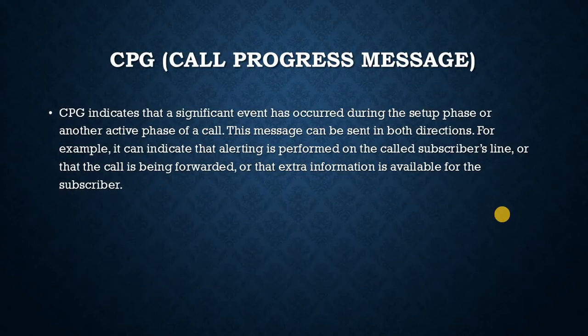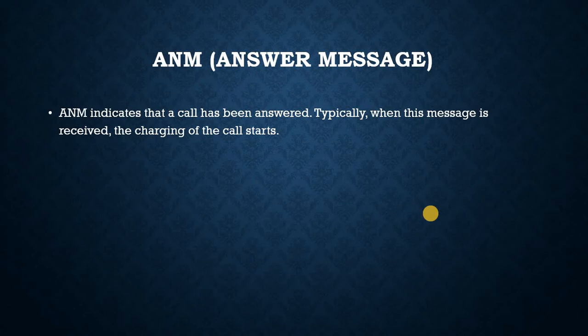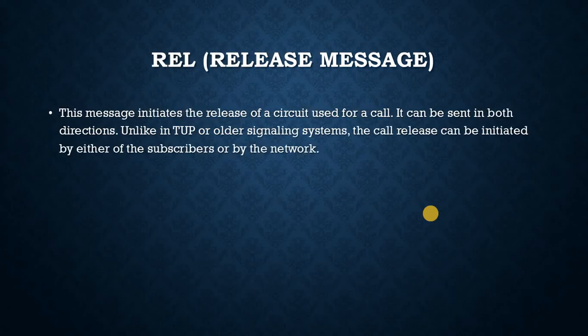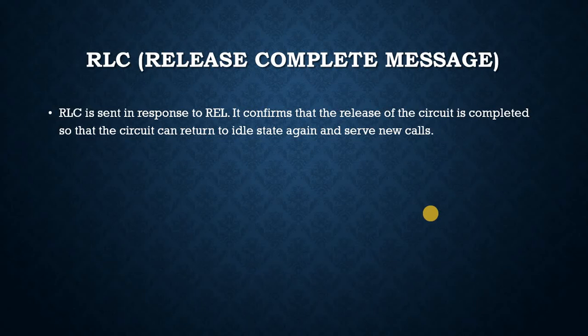CPG, Call Progress Message. CPG indicates that a significant event has occurred during the setup phase or another active phase of a call. This message can be sent in both directions. For example, it can indicate that alerting is performed on the called subscriber's line, that the call is being forwarded, or that extra information is available for the subscriber. ANM, Answer Message. ANM indicates that a call has been answered; typically, when this message is received, charging of the call starts. REL, Release Message. This message initiates the release of a circuit used for a call and can be sent in both directions. The call release can be initiated by either subscriber or by the network. RLC, Release Complete Message. RLC is sent in response to REL and confirms that the release of the circuit is completed, so the circuit can return to idle state and serve new calls.